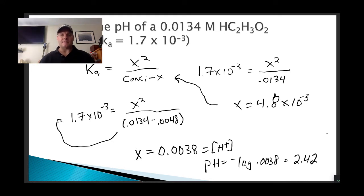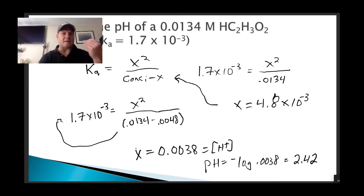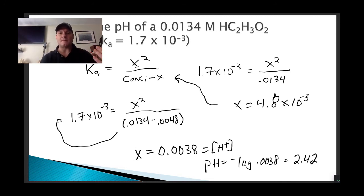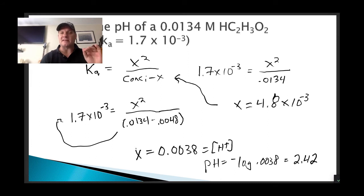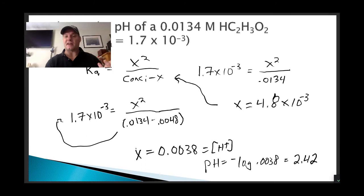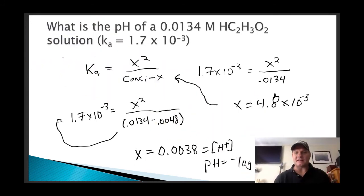That makes sense. To summarize: we ignore X in the denominator, so it becomes initial concentration times Ka equals X squared. Solve for X, reinsert that X back into the denominator, then multiply the new concentration value times Ka and take the square root. That gives us our hydrogen ion concentration, and the negative log of that gives us our pH.